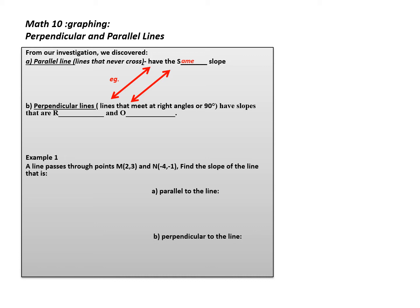Perpendicular lines, from our investigation, are lines that meet at right angles or 90 degrees. What we notice about their slopes is that they are reciprocal, which means that the two numbers multiply to equal 1. So if the original slope was 2 over 3, its reciprocal would be flipped, or 3 over 2.